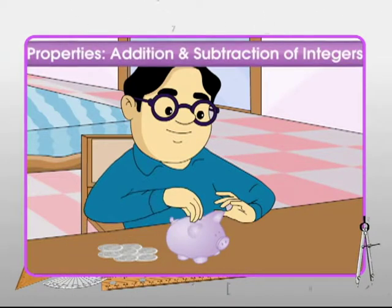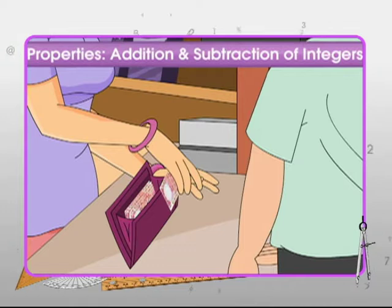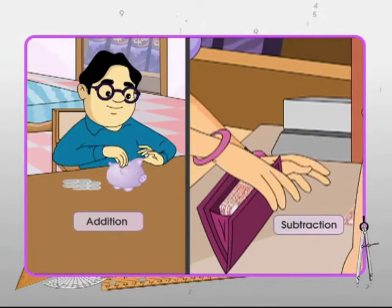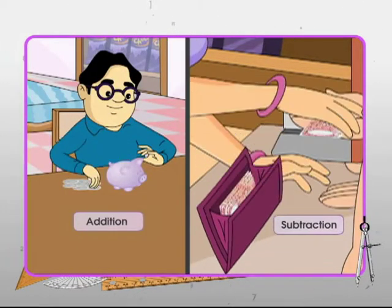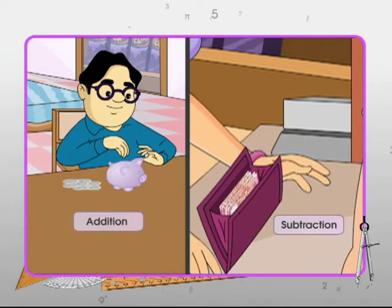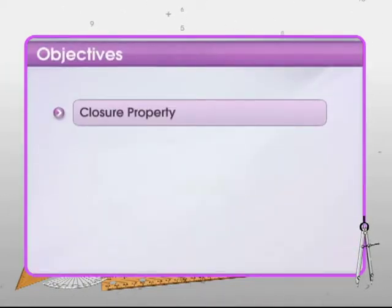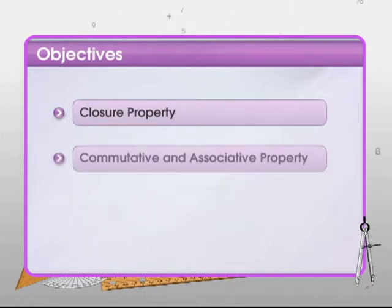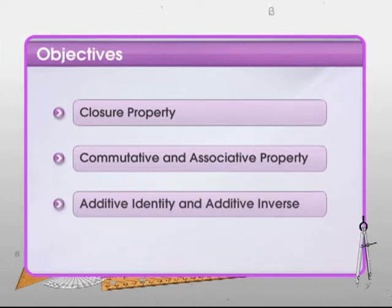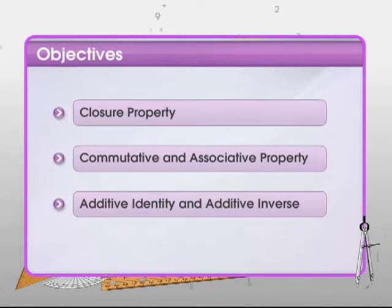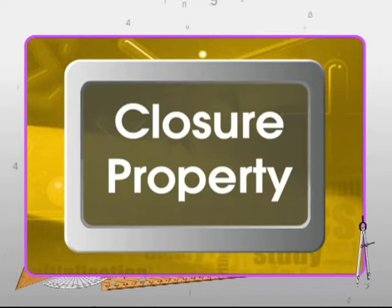Many situations in our day-to-day life can be answered using two fundamental operations: addition and subtraction. In this module, we will explore the closure property for addition and subtraction of integers, then the commutative and associative properties, and finally the identity and inverse for the operation of addition.